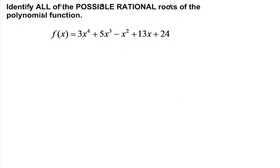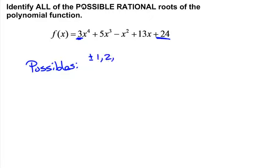Moving to the next problem, we're asked to identify all the possible rational roots of this polynomial function. We're just listing off possible rational values that could be zeros — anywhere where it might cross the x-axis. We'll take the factors of our last term, 24, and list those off. The factors of 24 are 1, 2, 3, 4, 6, 8, 12, and 24.